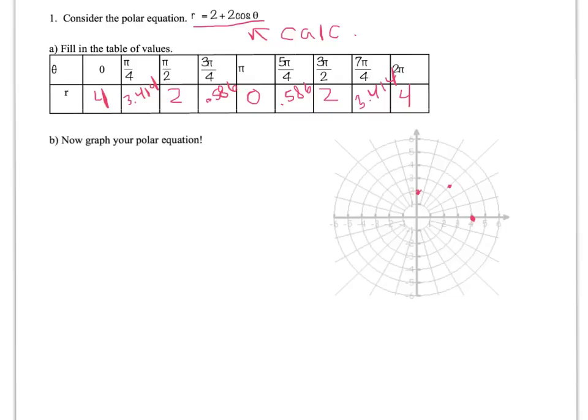When theta is 3 pi over 4, 135 degrees, I walk out 0.586, so about, you know, a little more than a half, which is tough to do here, so this point can suffice.